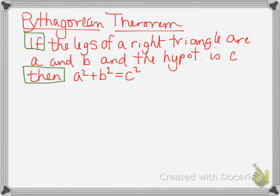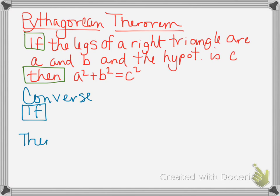So what we want to talk about is something called the Converse of the Pythagorean Theorem. A converse is kind of a type of opposite, and what we're going to be doing with the converse is switching the 'if' and 'then' parts — they're going to be opposite.